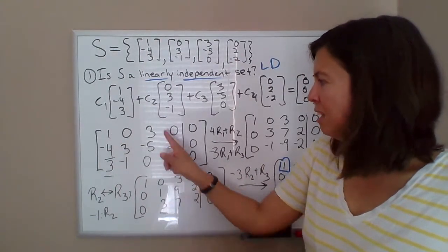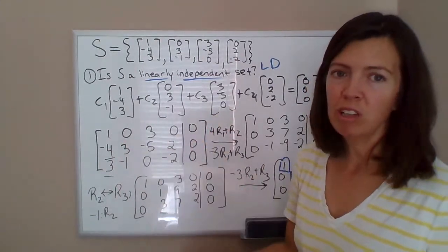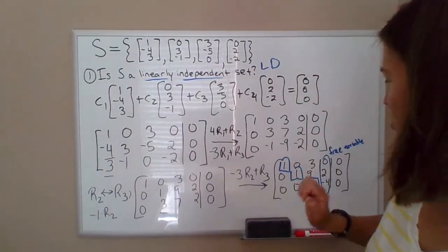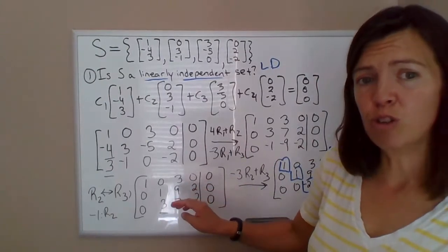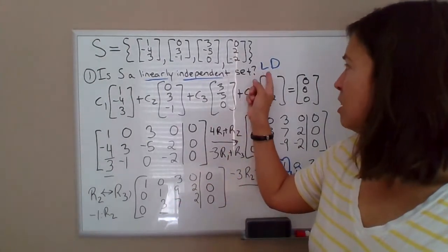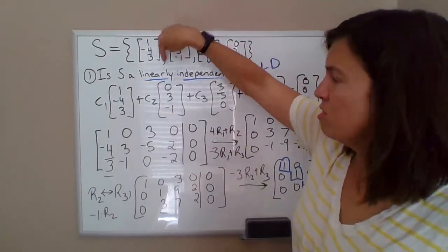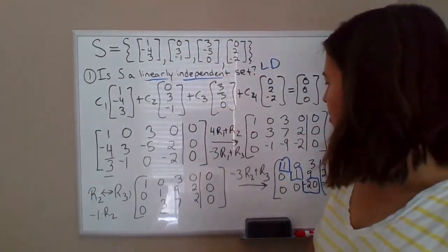So there's guaranteed to be a free variable without even row reducing, we could have realized that, and so guaranteed to be a free variable, that means there's guaranteed to be non-trivial solutions, which means it's guaranteed to be linearly dependent, whenever the number of vectors exceeds the number of entries in each vector.